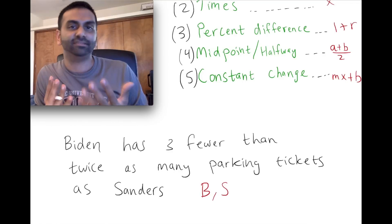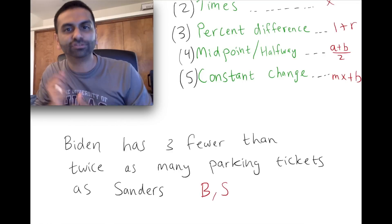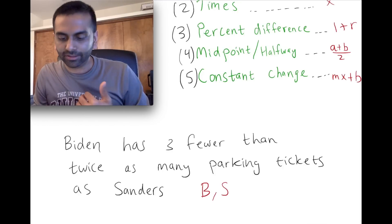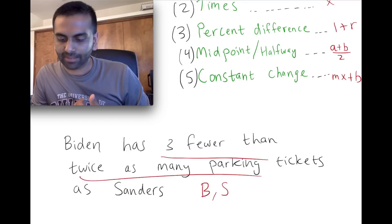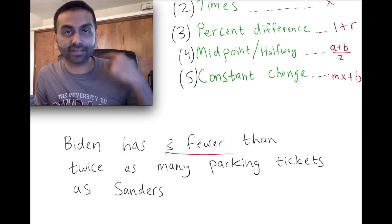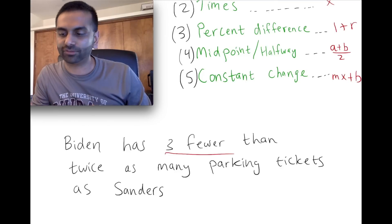has. And I'm going to define this other thing called s, and that's the number of parking tickets that Sanders has. So you've defined these things. Now you can use b and s in an equation however you want to, and how do we want to use them? Well, we want to represent this real-world scenario. We